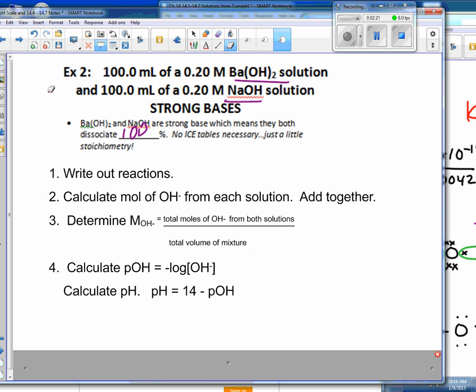Now we got a strong base example. A little bit more difficult because we're mixing two solutions. The two solutions both have strong base. So, both strong bases are going to dissociate 100%. In a nutshell, write out the reactions just like we did before. I would calculate the total moles of OH minus, from this solution and the OH from this solution and add them together. Then, determine the total molarity of the OH minus in this mixed solution. Your formula would be total moles of OH minus from both solutions over the total volume, which would be the 100 plus the 100, 0.2 liters. Then, you can calculate the pOH, because this is the concentration of OH minus. If you take the negative log of OH minus, then that's going to be the pOH. Then, you can calculate the pH.